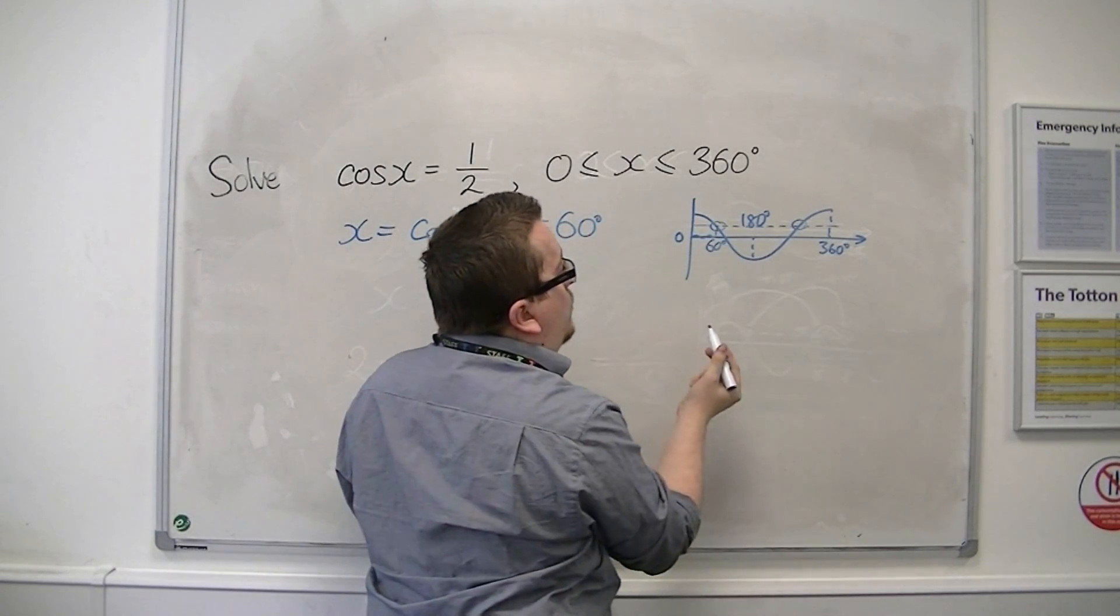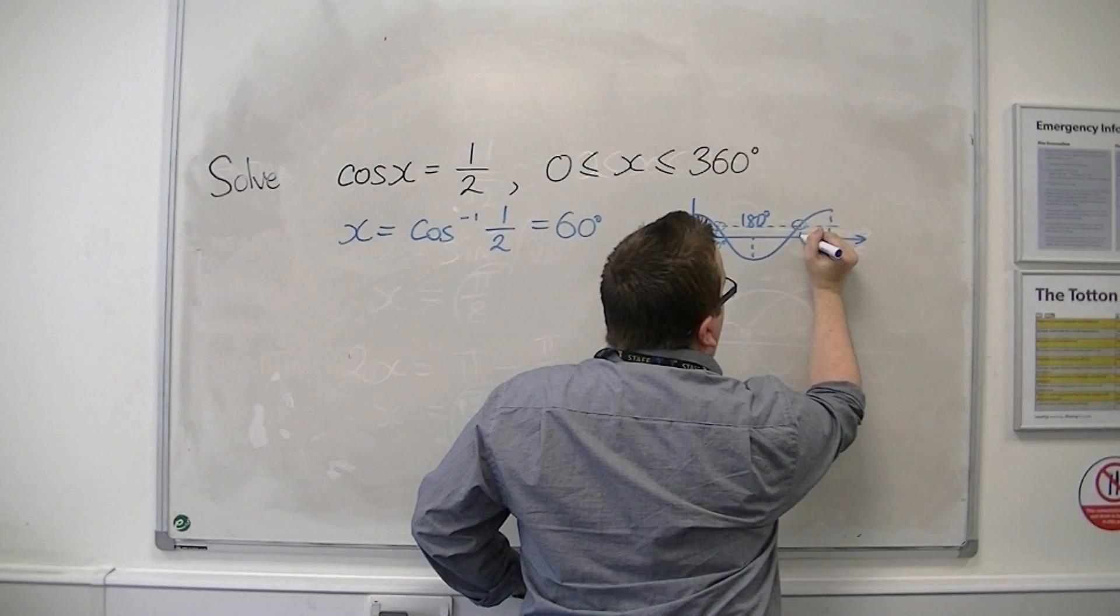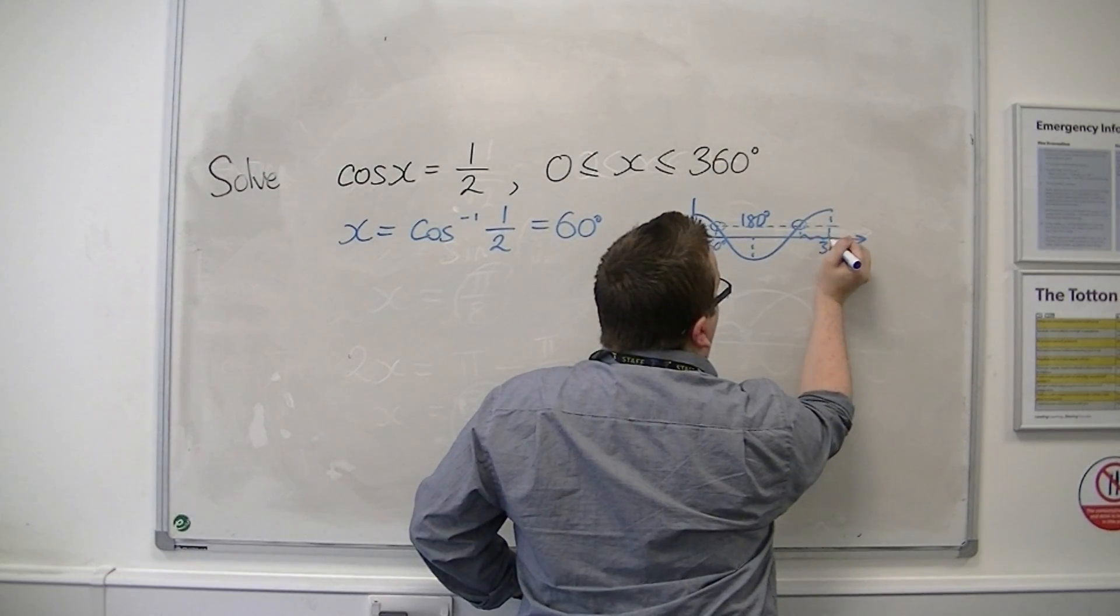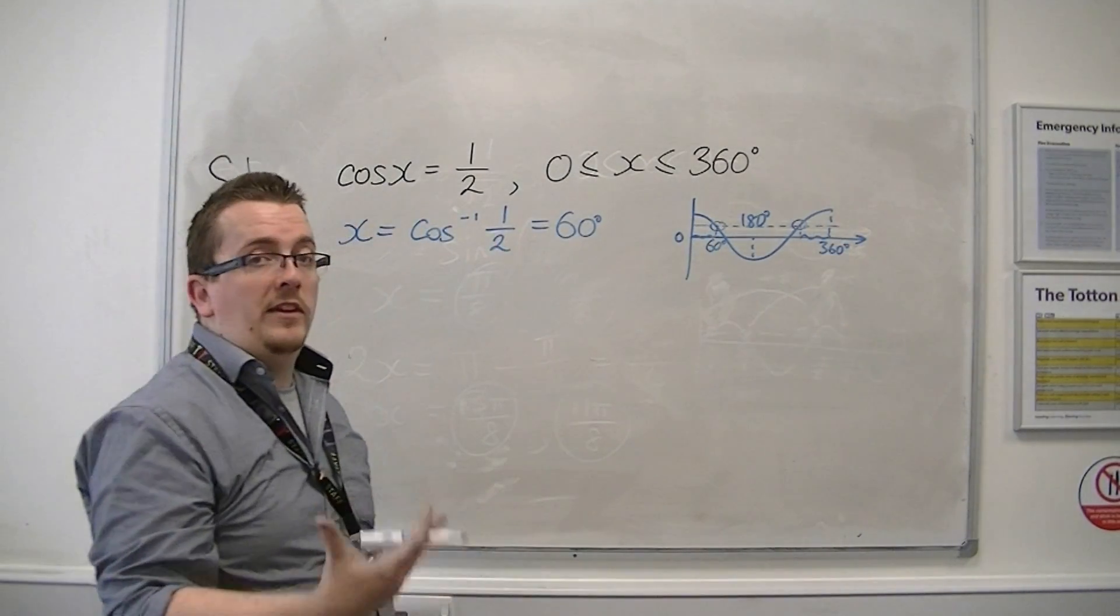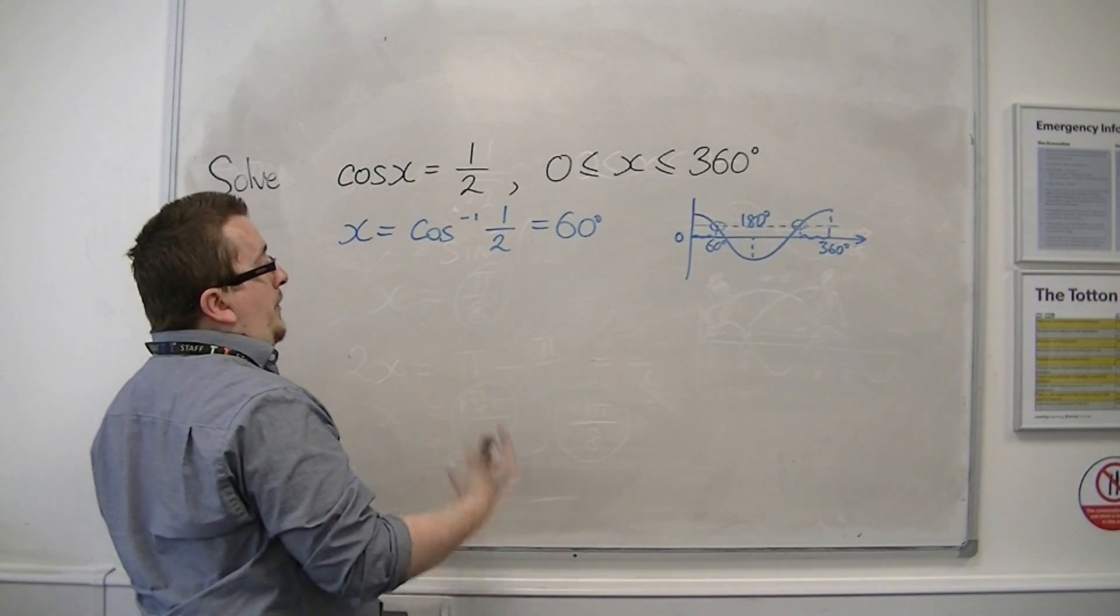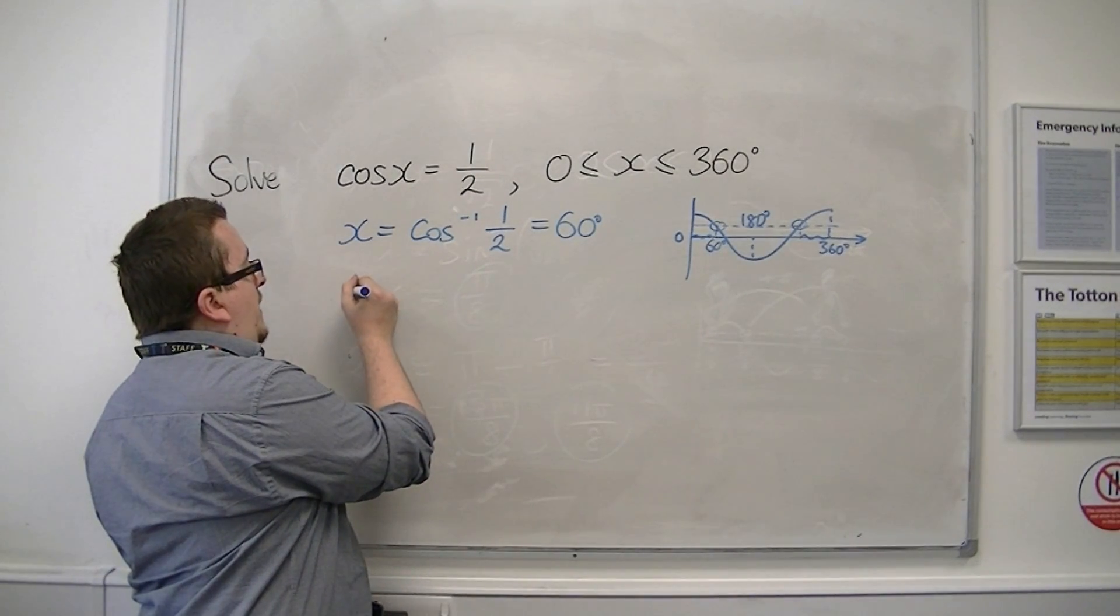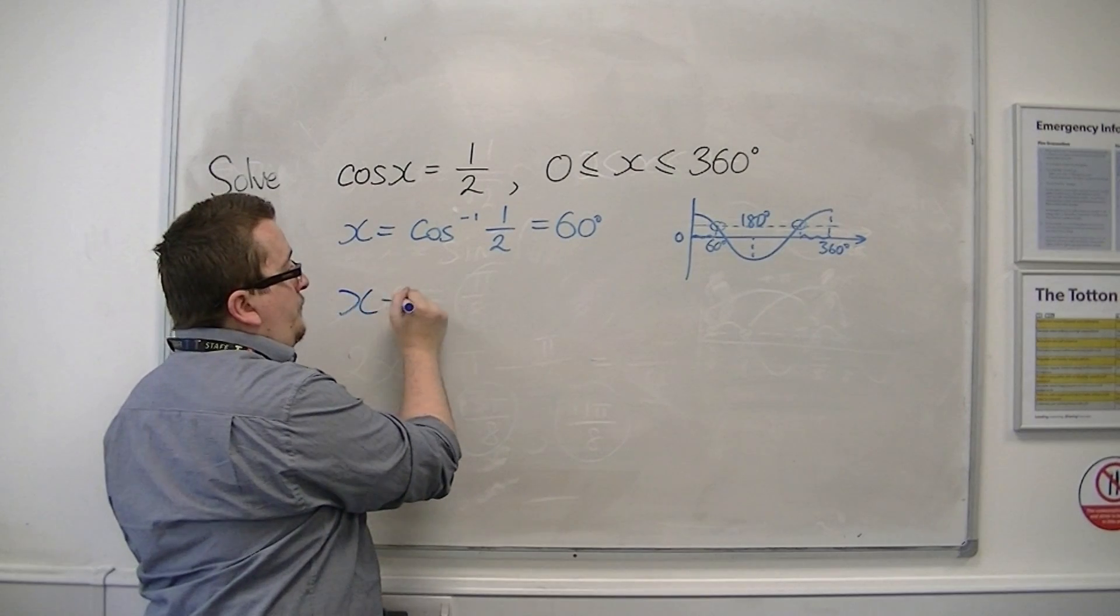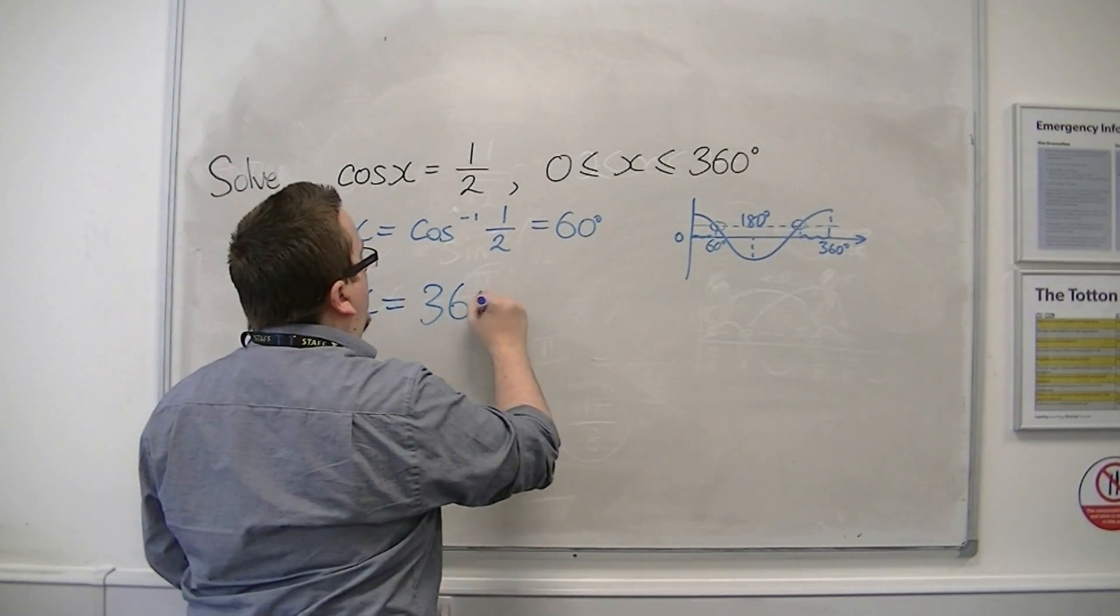then this distance from 360 to the second solution must also be 60 degrees. And so you can find the second solution by taking 60 away from 360.